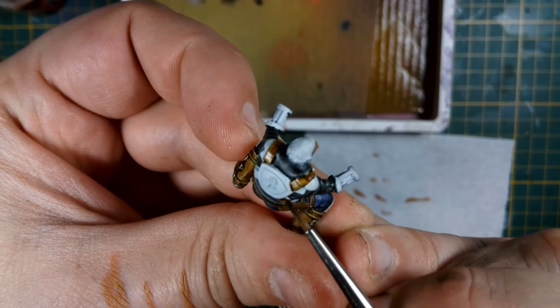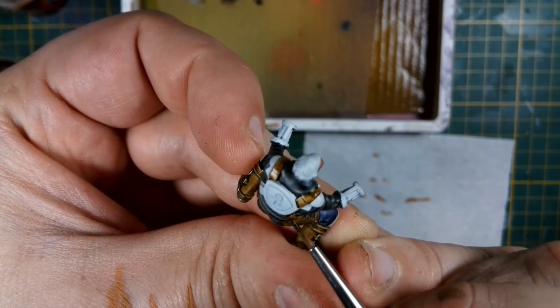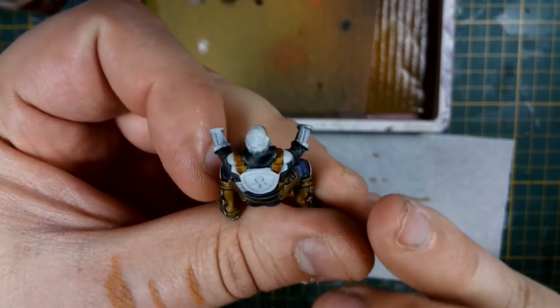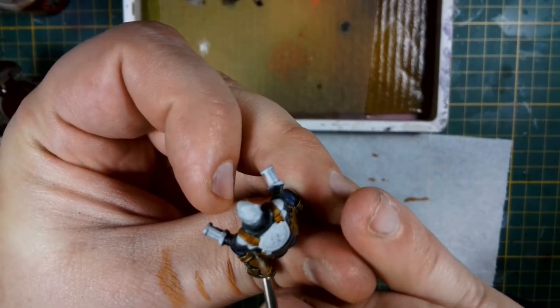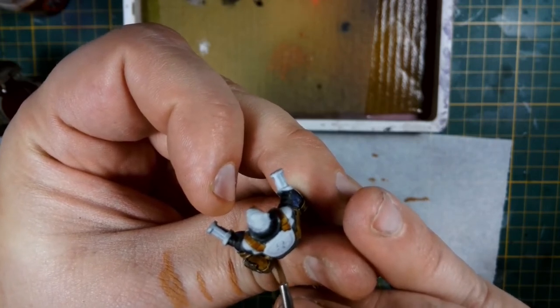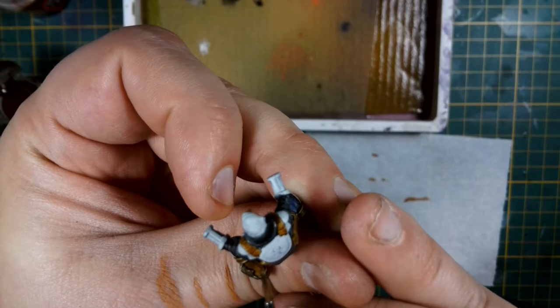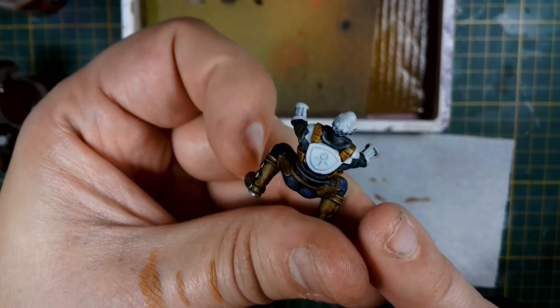Once those flesh tones are applied I continue using the same snakebite leather that we used earlier in the video to go over all of the leather straps on the top of the torso. So again the reason why I didn't do this in the first step is because I wanted to finish the bottom half of the model first. So you have something that you can hold on to without being afraid to damage the rather frail contrast paints that I'm using in this process.